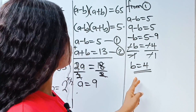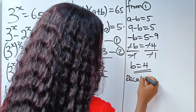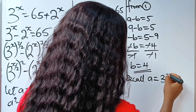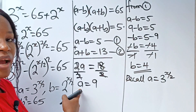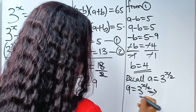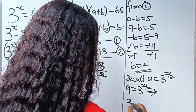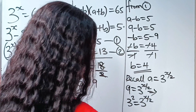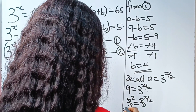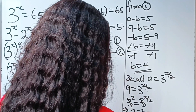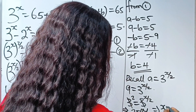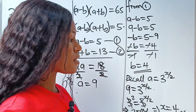We've not actually found our x yet. Recall that our a is equal to 3 to the power of x over 2. We found a to be 9, so we can write 9 is equal to 3 to the power of x over 2. That means 3 squared is equal to 3 raised to the power of x over 2. Since the bases are the same, the powers are equal, so 2 is equal to x over 2. Cross-multiplying, x equals 4.